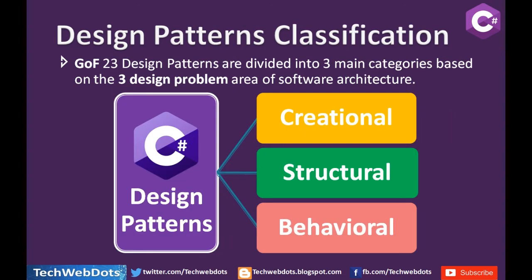Now we will talk about classification. The Gang of Four's 23 design patterns are divided into three main categories based on three design problem areas in the software architecture or web application world. Those three categories are: Creational, Structural, and Behavioral. As we progress through this course, we will discuss each with easy, real-time examples.